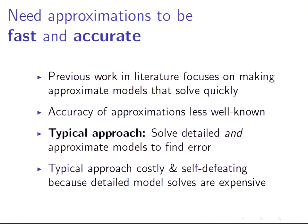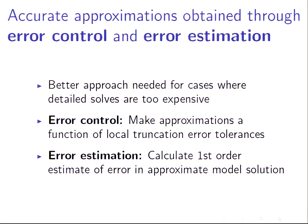So we need a better approach. The better approach I'm proposing involves two main characteristics. One is error control: we're going to make the approximations a function of some error tolerances on our simulation — we really care about accuracy, so why not make the approximation tailored to that? And then, once we generate the approximate model solution, we want to know what the error is, and we can calculate first-order estimates of the error, which I actually just figured out three weeks ago.